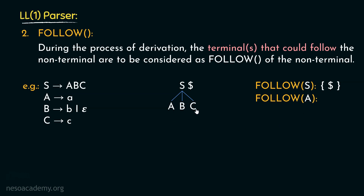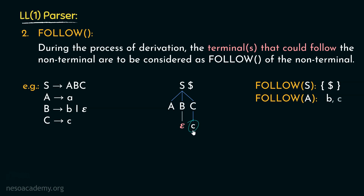Let's now find out the follow of A. The non-terminal A is followed by BC — these two are also non-terminals, but in the set of follow we need terminals. Coming to B, it can derive small 'b'. So basically, during the process of derivation, the non-terminal A is actually followed by the terminal symbol 'b'. Now there is another production rule involving the capital B non-terminal, that is B can be rewritten as epsilon. So in case B derives epsilon, we don't have any terminal yet which will follow A, so we need to consider C. C can derive small 'c' — C can be rewritten as small 'c'. So in case B derives epsilon, the non-terminal A is being followed by the terminal symbol small 'c'. Therefore, in follow of A, we will have the terminals 'b' and 'c'.